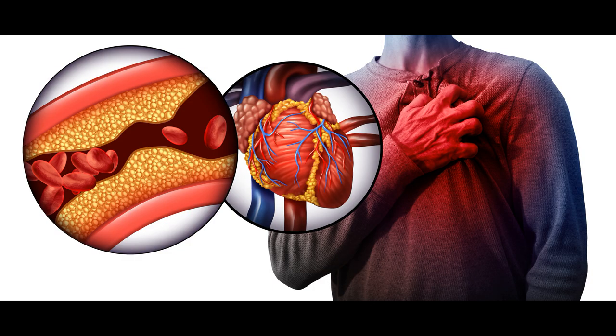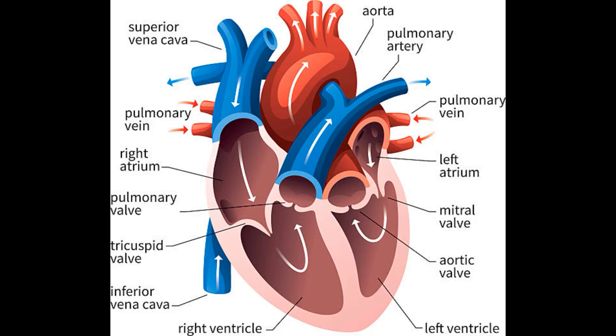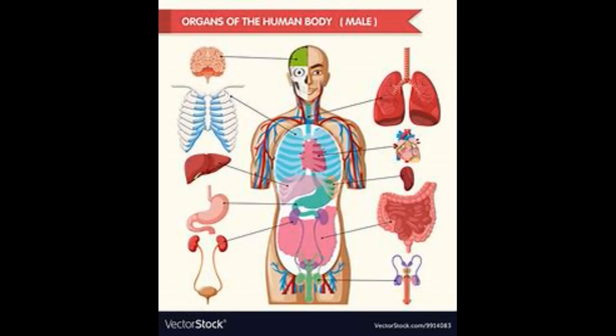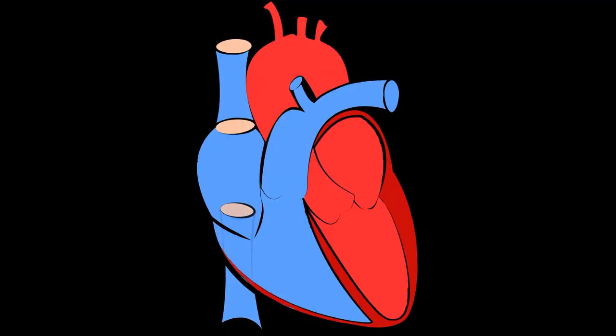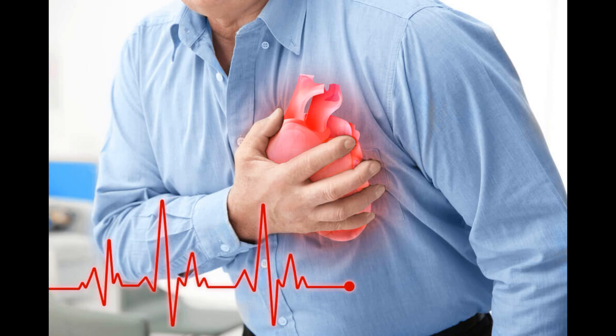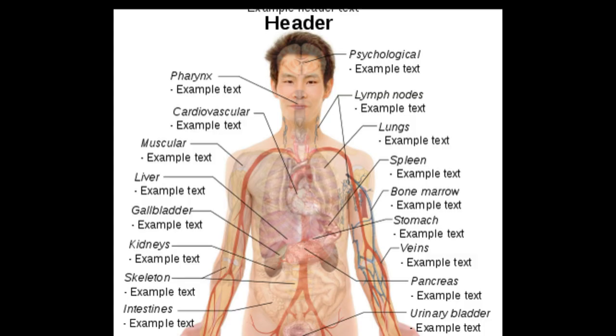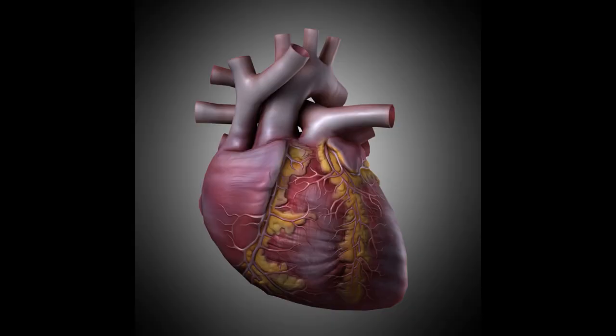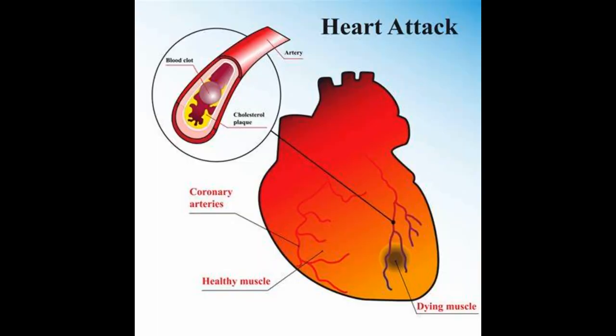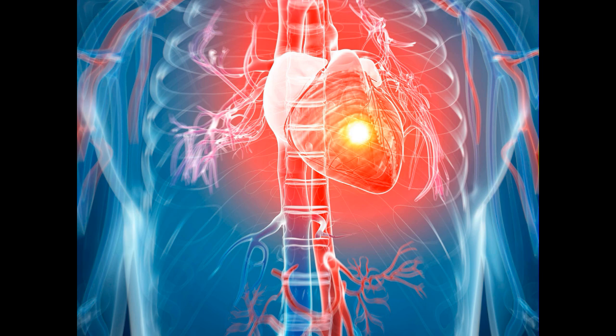The next level of structural organization is the system level. A system consists of related organs that have a common function. An example is the digestive system, which breaks down and absorbs food. Its organs include the mouth, salivary glands, pharynx, esophagus, stomach, small intestine, large intestine, liver, gallbladder and pancreas.